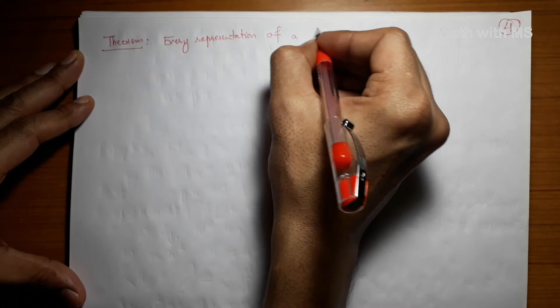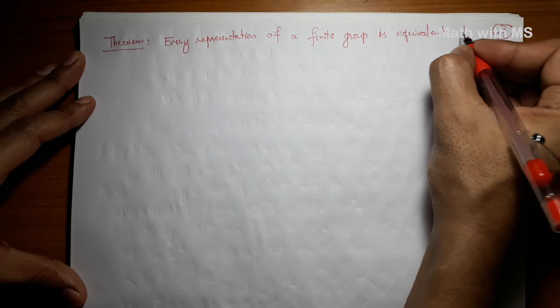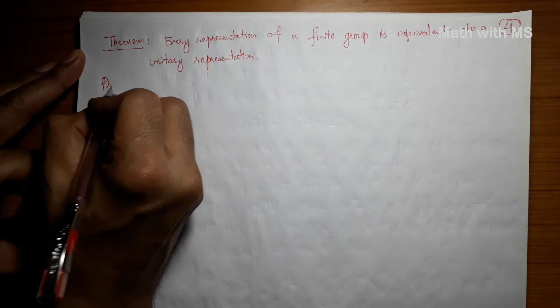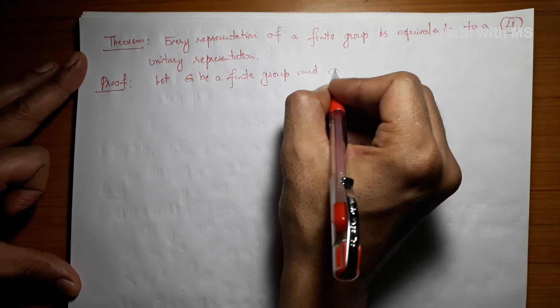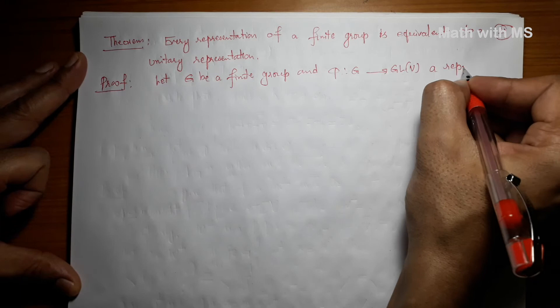Theorem: Every representation of a finite group is equivalent to a unitary representation. Proof: Let G be a finite group and phi from G to GL(V) a finite-dimensional complex representation. We need to find a unitary representation equivalent to phi.